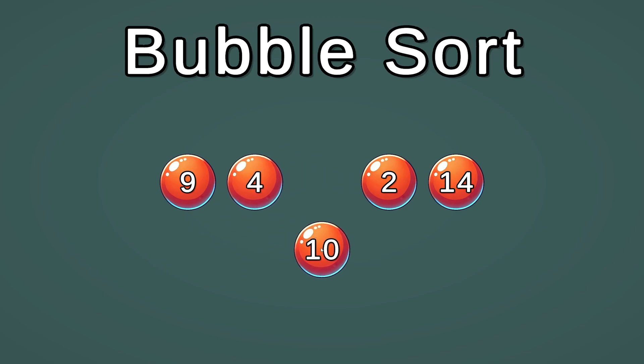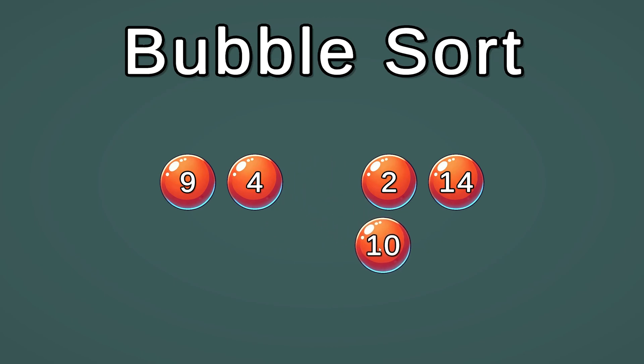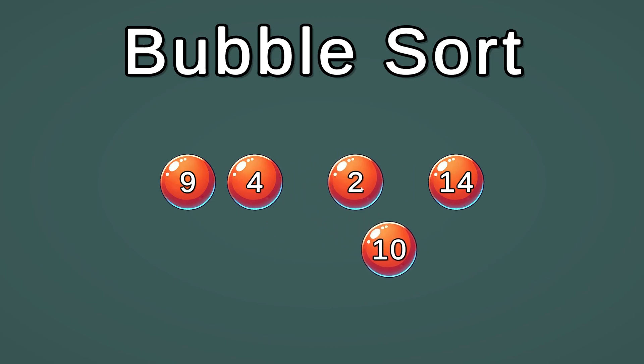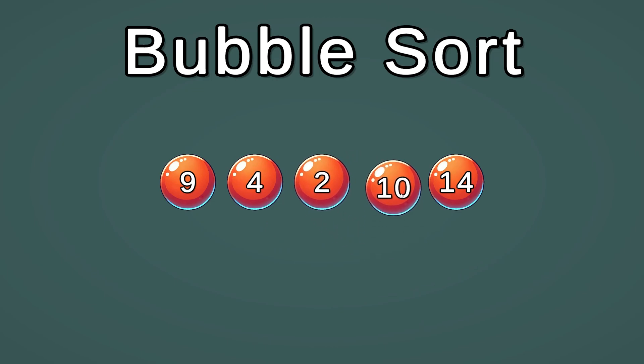10 and 4 are also in the wrong order, so we swap those. 10 and 2 are also wrong, so we swap those two. Now 10 is in its correct position. We don't have to compare it with 14 because 14 was already placed in its right position on the previous pass.